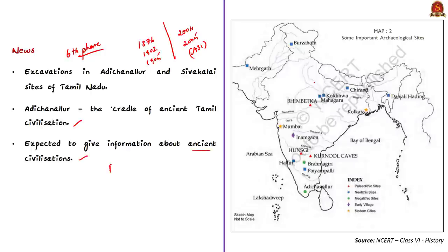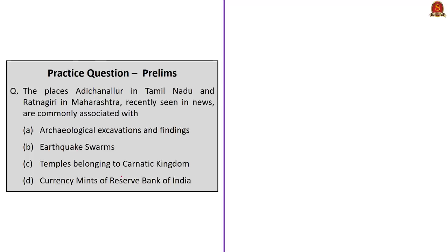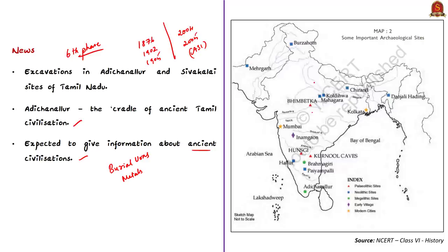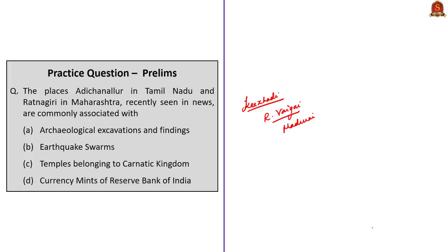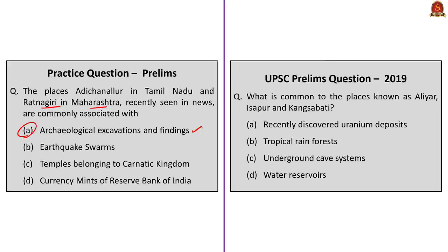These excavations are expected to give information about the ancient civilization that flourished in this region, as one can find burial urns and metals used by ancient Tamils. There was also one more place in the news in 2019 — Keeladi — which gives a glimpse of the civilization on the banks of river Vaigai, located southeast of Madurai. In this picture you can also find some other important archaeological sites of India from your Class 6 History NCERT book. The question framed here asks which places — Adhichanallur in Tamil Nadu and Ratnagiri in Maharashtra — are commonly associated with, and the correct answer is option A: archaeological excavations and findings.